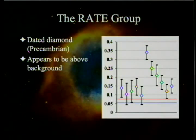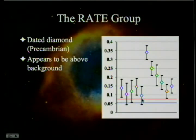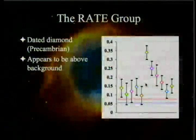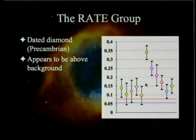The RATE group also dated some diamonds. Some were close to their official background and could conceivably be just background noise at two standard deviations, whereas some were clearly outside. Now, diamonds are very difficult to burn, and it's possible the procedure may have introduced some carbon-14, so I'm a little cautious. But diamonds are pre-Cambrian, which means there shouldn't be any carbon-14 whatsoever in them — and at first pass, it looks like there is.